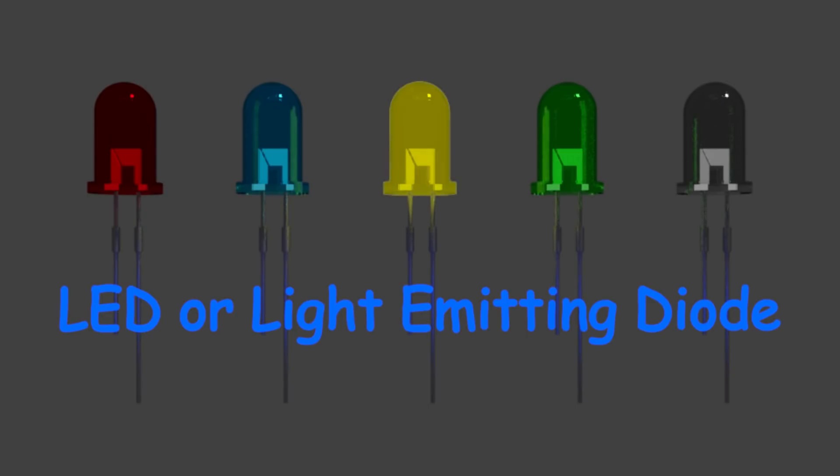These diodes emit light when it is forward-biased. When any diode is forward-biased, current flows through the diodes.